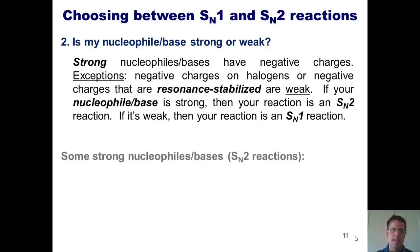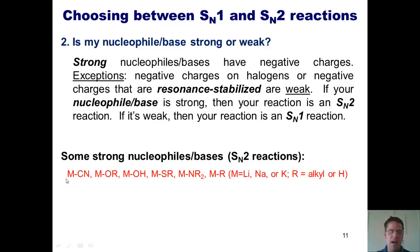Here's a chart showing some examples of strong nucleophiles, which are once again going to be the guys who participate in SN2 reactions. If I've got M stuck to cyanide, M stuck to OR, OH, SR, NR2, or R, where M is a metal, either lithium, sodium, or potassium, and R can be any alkyl chain, these are all extremely strong nucleophiles.